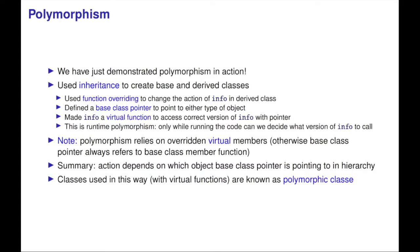Recap: we've demonstrated polymorphism in action. We used inheritance to create base and derived classes. We used function overriding to change the action of the function info in a derived class. Defined the base class pointer to point to either type of object. Made info a virtual function to access the correct function with a pointer. This is called runtime polymorphism—only while running the code can we decide what version of info to call. Note, polymorphism relies on overridden virtual members. Otherwise the base class pointer always refers to the base class member function. In summary, the action depends on which object the base class pointer is pointed to in the hierarchy. Classes used this way with virtual functions are known as polymorphic classes.